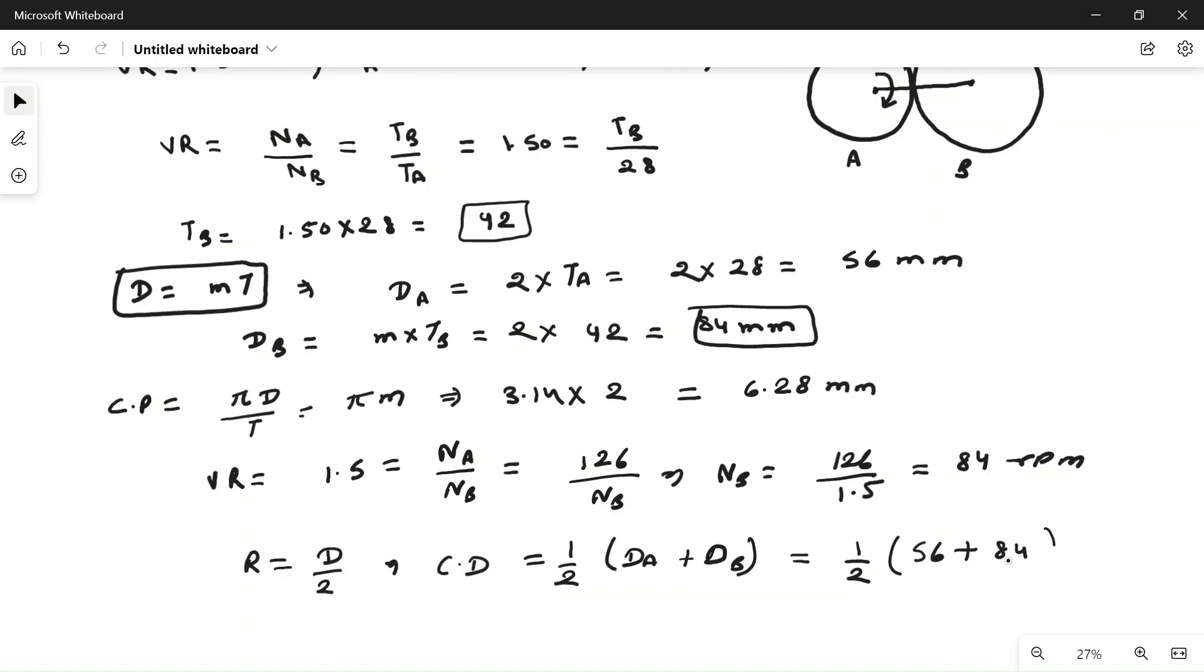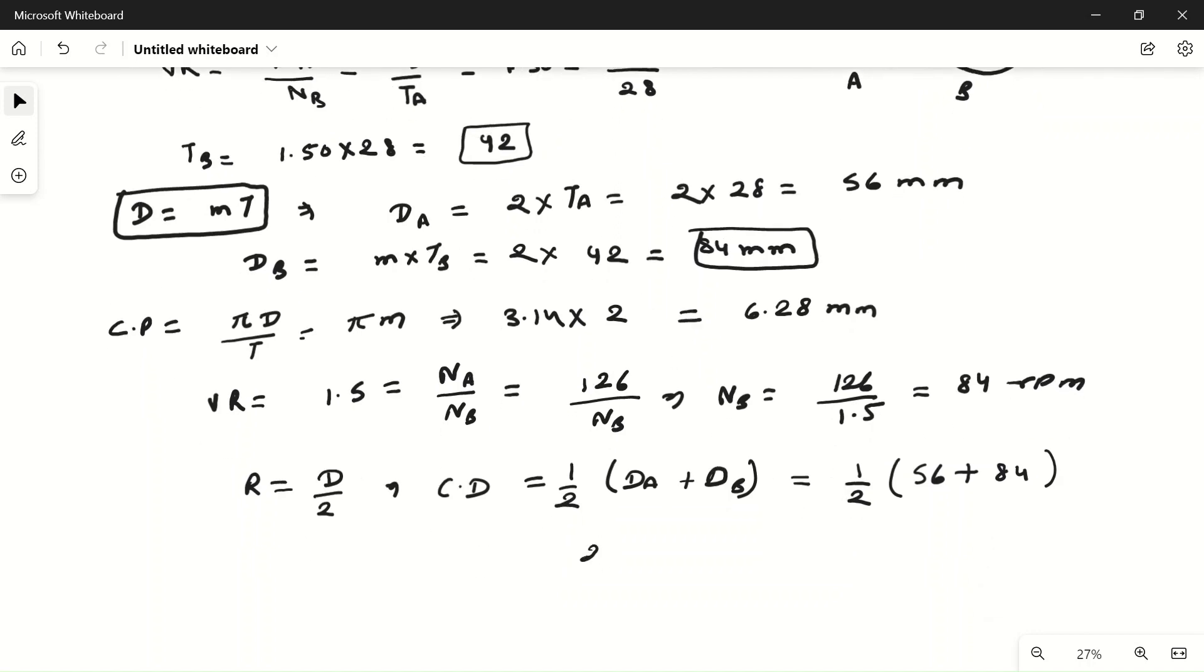Which will be equal to 28 plus 42, which is equal to 70 mm. This is the center distance.